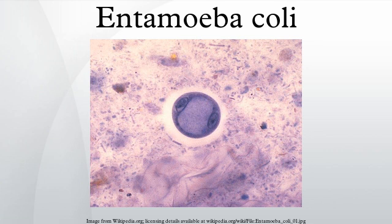Sometimes the Entamoeba coli has parasites as well. One is the fungus Spherita SPP., which lives in the cytoplasm of the E. coli. While this differentiation is typically done by visual examination of the parasitic cysts via light microscopy, new methods using molecular biology techniques have been developed.